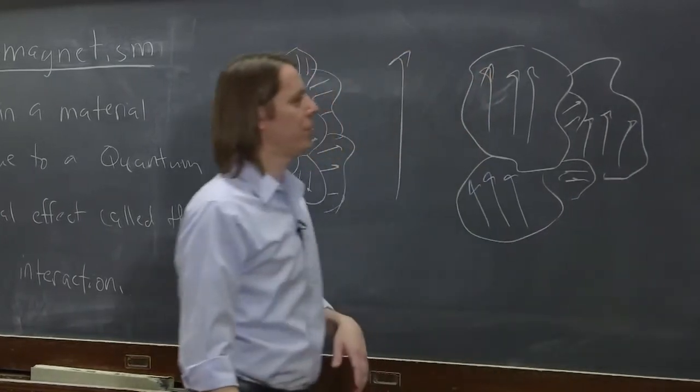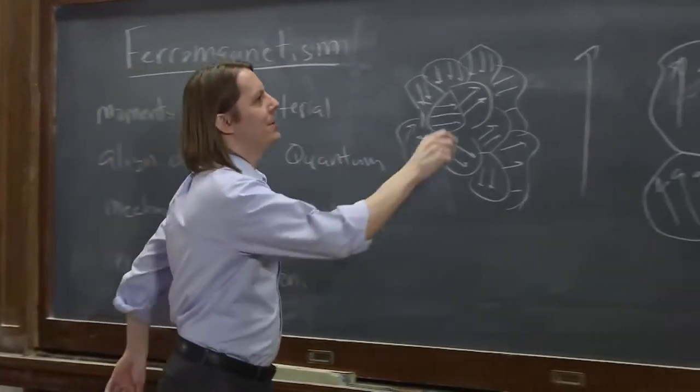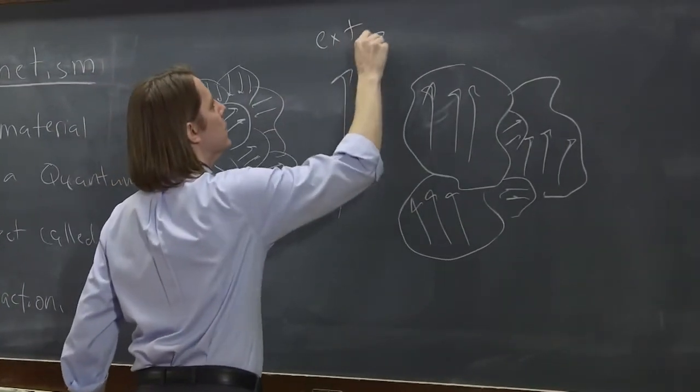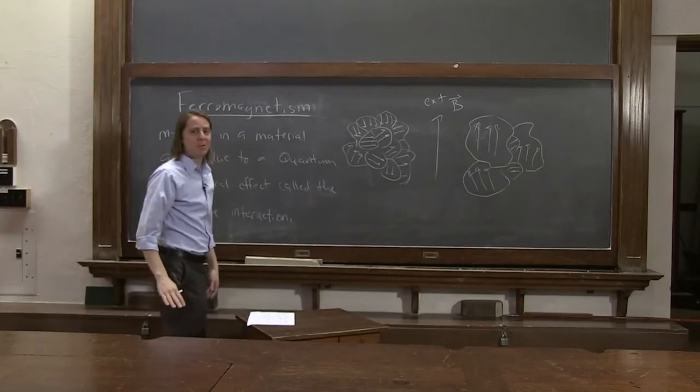So look in your physics book, there'll be much prettier drawings than I'm making here. But the point is, that you apply an external magnetic field, and it aligns the domains. And unlike paramagnetism, it'll stay that way.